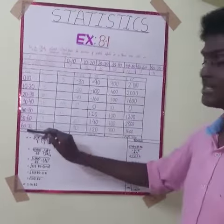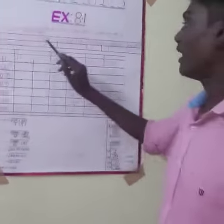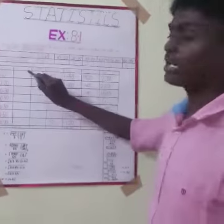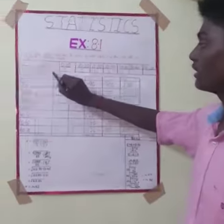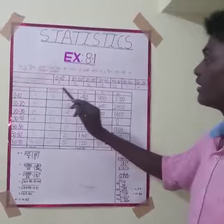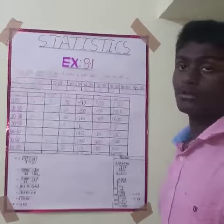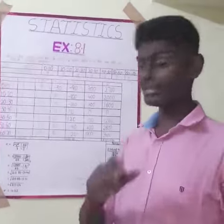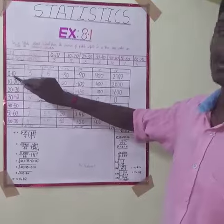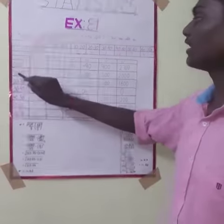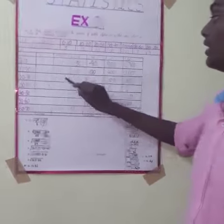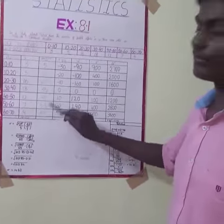We have a column for age and the number of people affected is F. X is the mid-value. For 0 to 10, mid-value is 5. For 10 to 20, mid-value is 15. Then 25, 35, 45, 55.